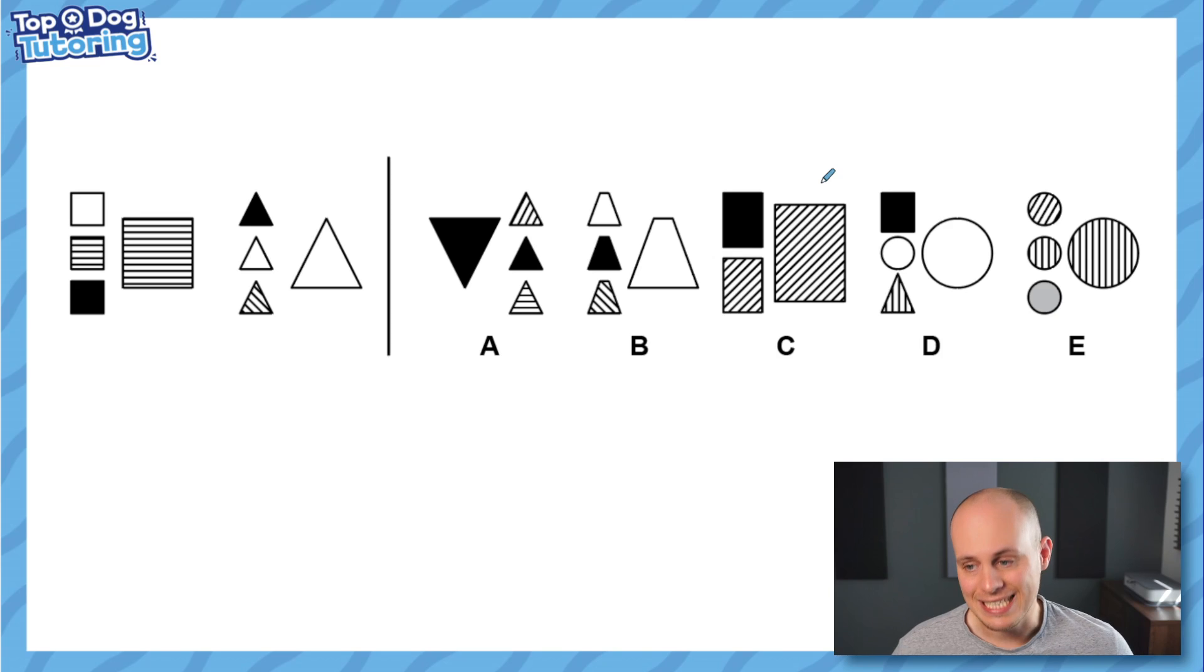So moving on to today's lesson, today's lesson is all about a question type that we like to call most alike. Now in these most alike questions you're given two sometimes three figures on the left hand side and you have simply got to pick one of the figures from the right A, B, C, D or E which best fits that group.